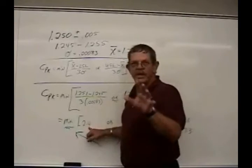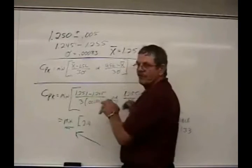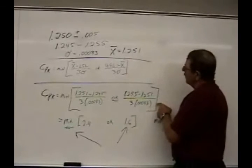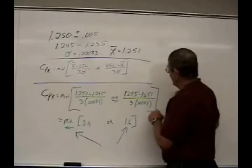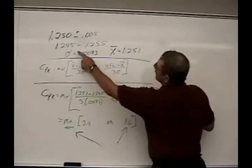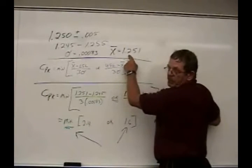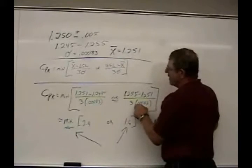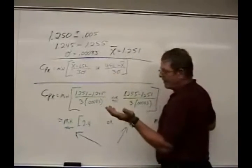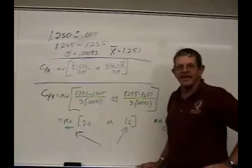But we need the minimum score, so you have to figure both. So you also have to look at the upper spec limit, which in this case is 1.255, minus the X bar number, which is 1.251, divided by 3 times sigma, again the same number, and you do the math, and you get 1.6.